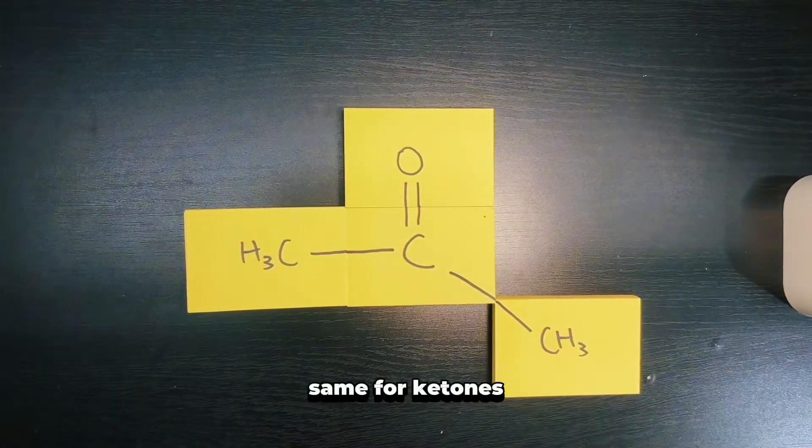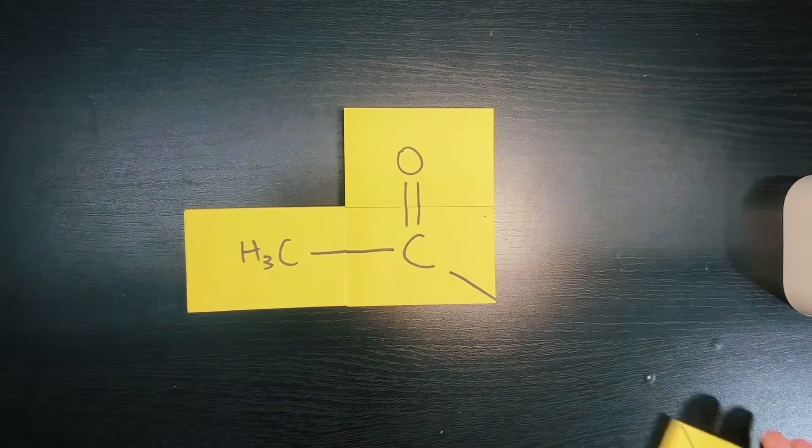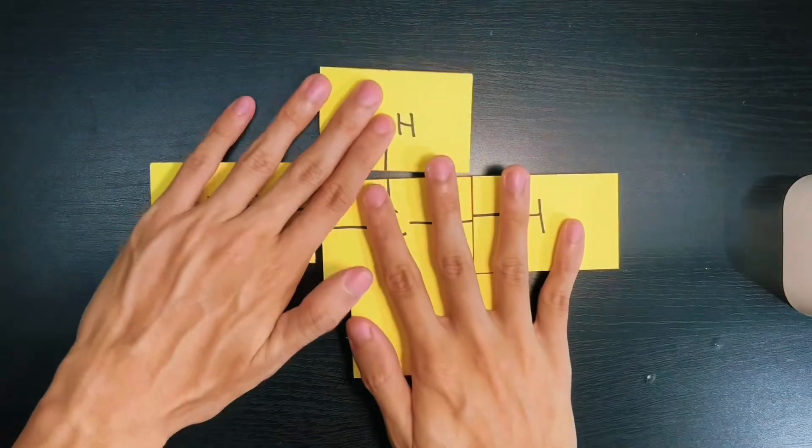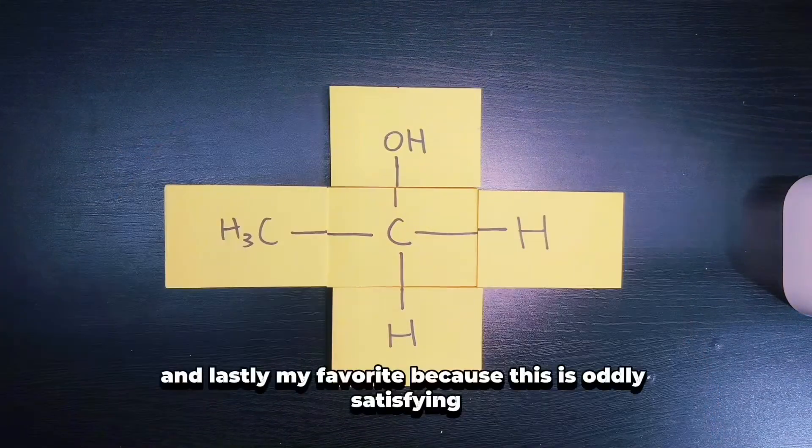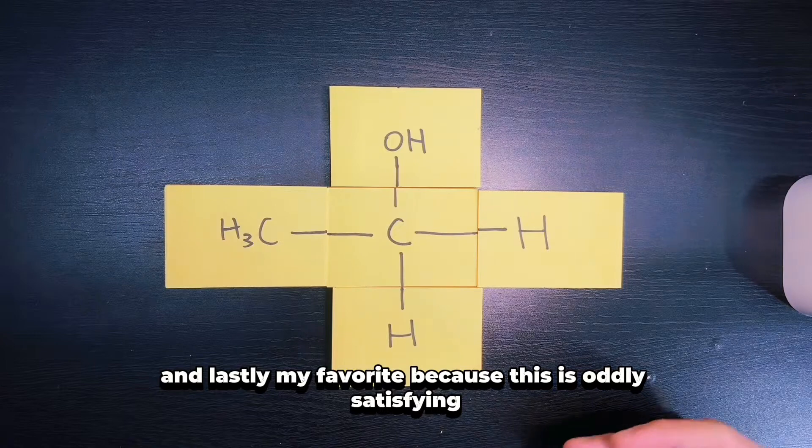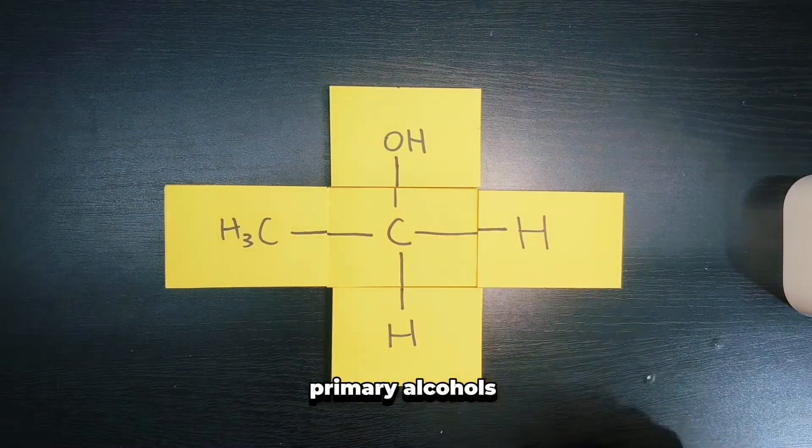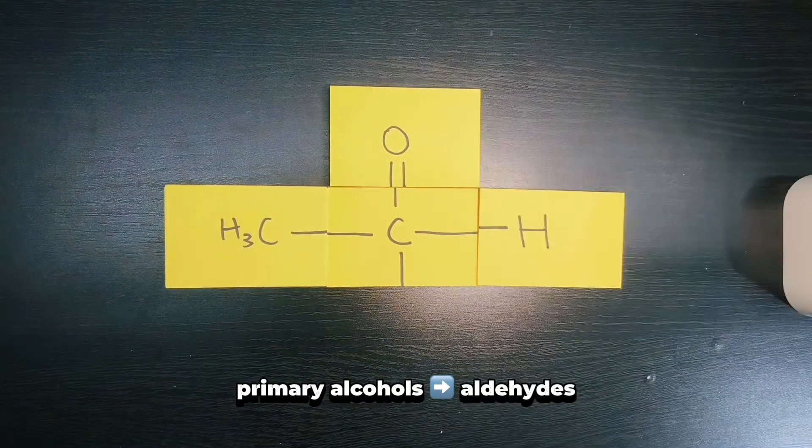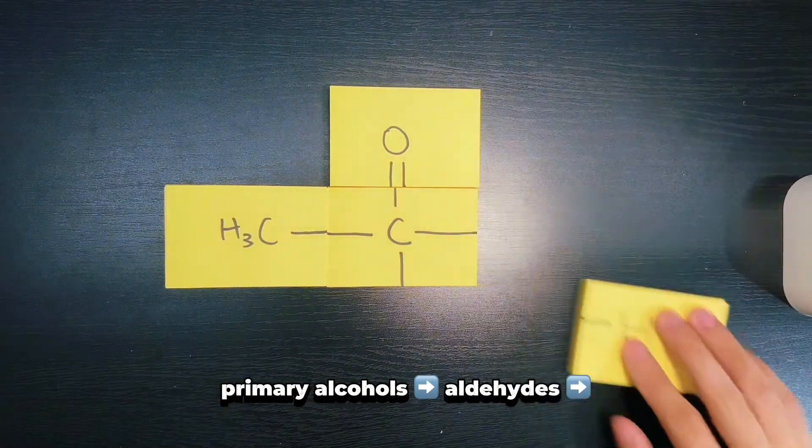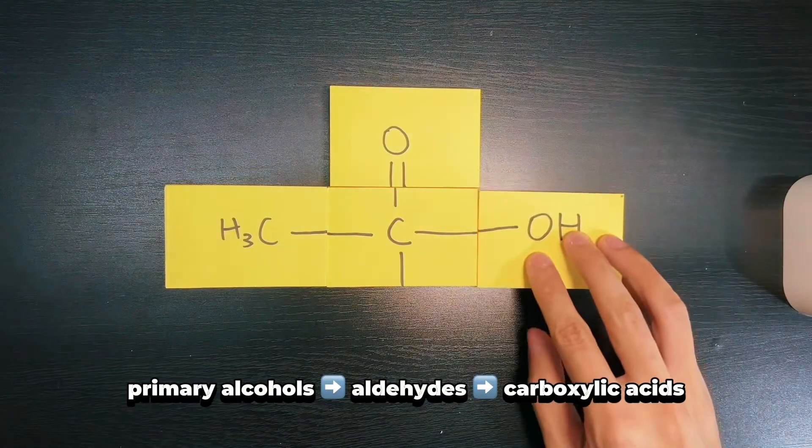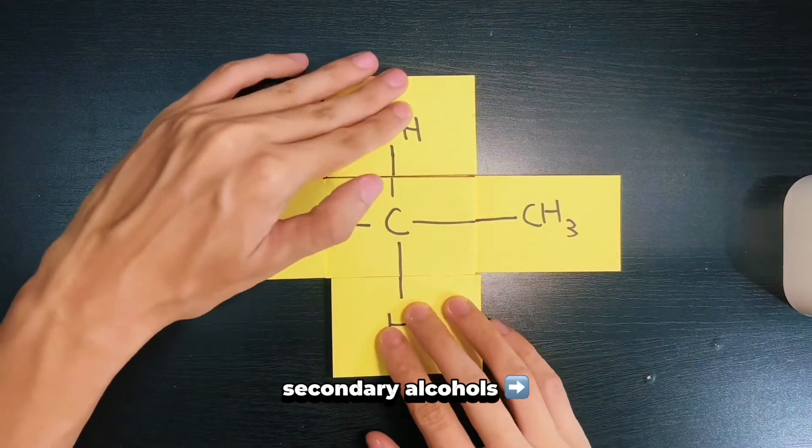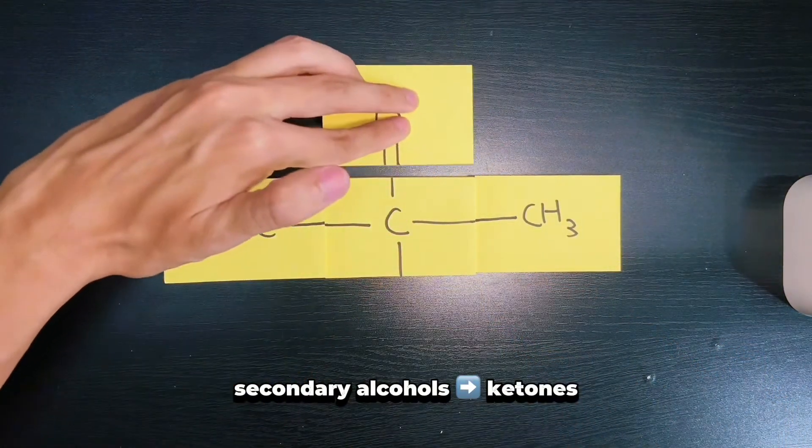My favorite, because this is oddly satisfying: if you notice, primary alcohols can be oxidized further to form aldehydes like this, which can further be oxidized to form carboxylic acids. The same for secondary alcohols—we can oxidize them directly to ketones.